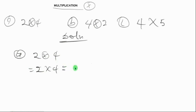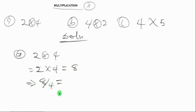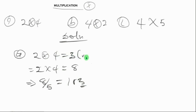Two times four equals eight. We then divide by the mod, which is five. Eight divided by five equals one remainder three, so the answer is three in mod five.